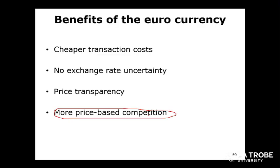The background to the euro was that before the European Union, European countries had to compete with the US, Russia, and emerging economies like China and India. It made sense for them to form a union so that collectively they could be stronger relative to their competitors across the world. So they formed the union and introduced a common currency so that they could compete across different markets.